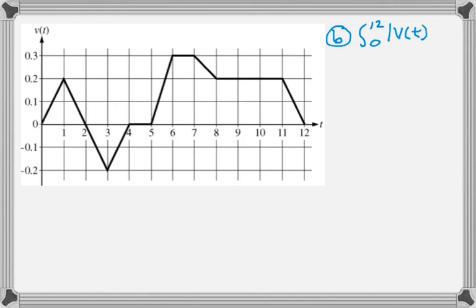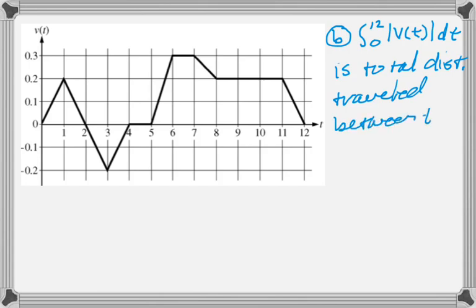The next question is that first I have to explain what the integral from 0 to 12 of the absolute value of v of t dt means. And remember, the absolute value of v of t is speed. So we're integrating speed. That's going to give us a total distance traveled. So this will just be the total distance that was traveled between t equals 0 and t equals 12.